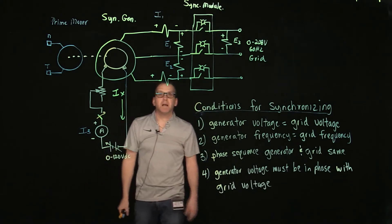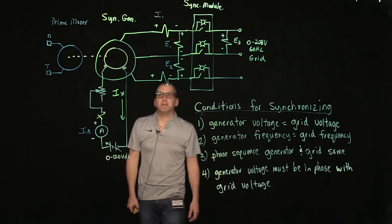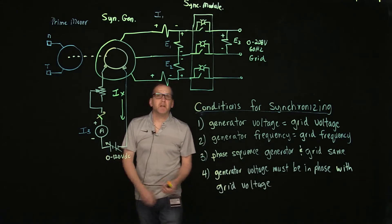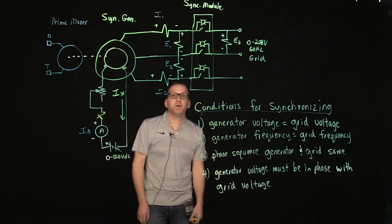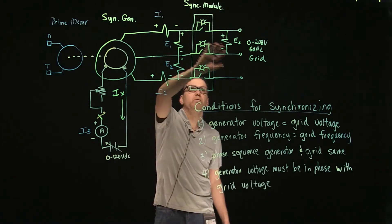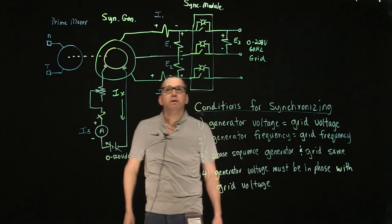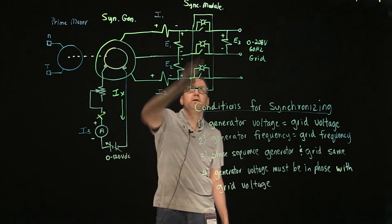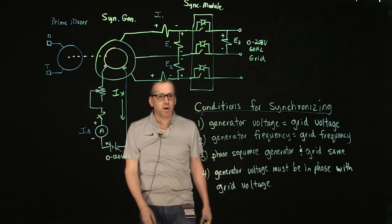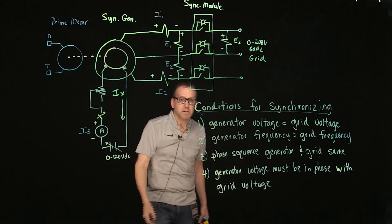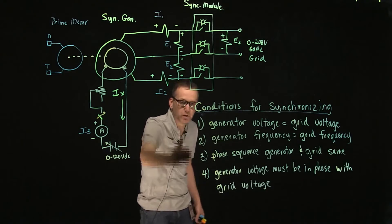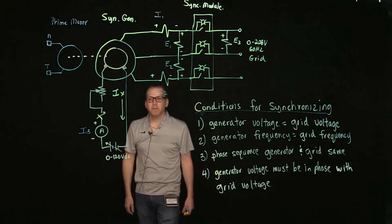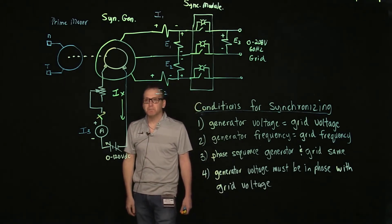Here is our schematic that we are going to connect in the lab. The instrumentation we are using to determine these conditions are our voltmeters and our synchronizing module. This will allow us to observe and determine when these conditions are met for synchronizing.